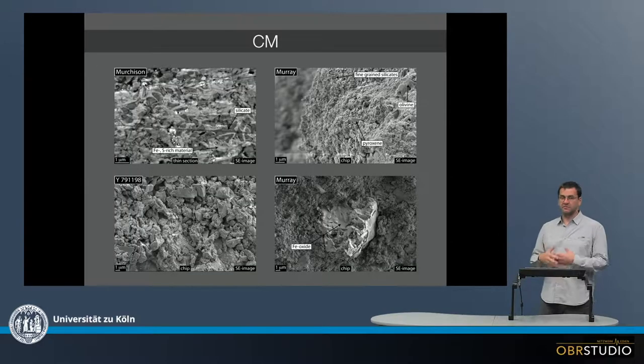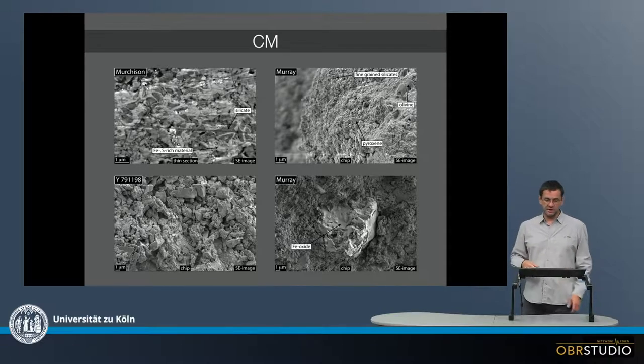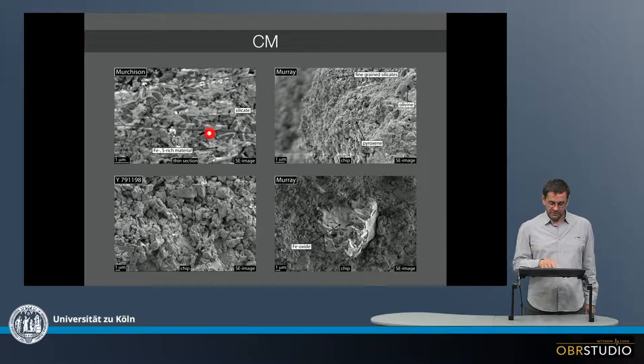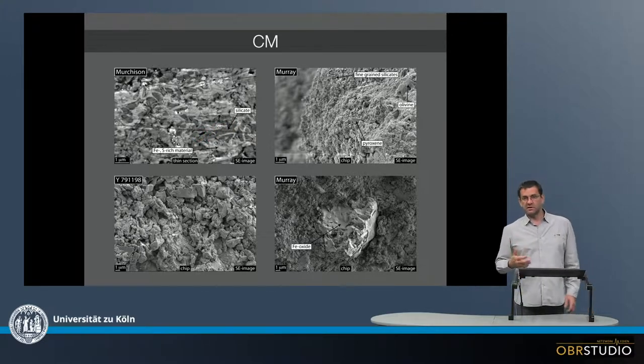In the CM chondrites, these are heavily hydrously altered, which is if you look in the thin section, there's nothing like space in between individual crystals, because there's a lot of new crystals that formed from hydrous alteration. So this is the silicates, the darker ones, and this in between is very likely some hydrous minerals here.